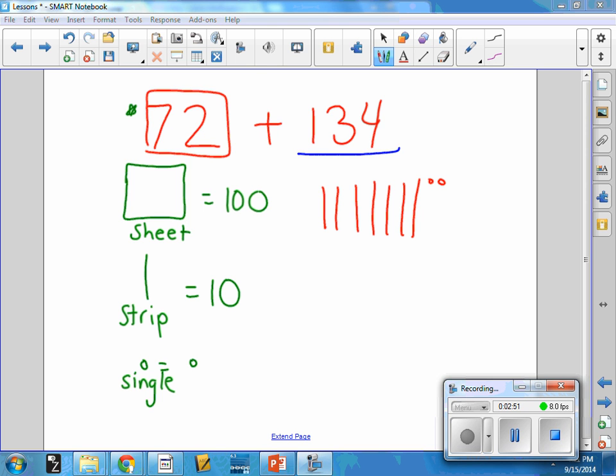The 134 would look something like this. They would have the sheet, which represents the 100. They would have three strips, which represents the 30. And then they would have four singles to represent those four.